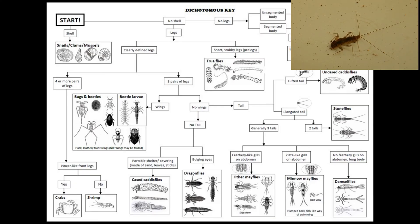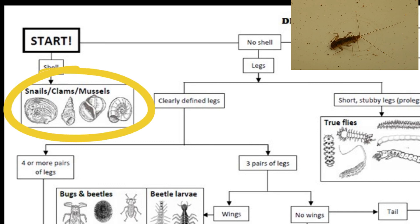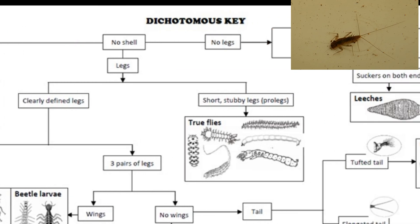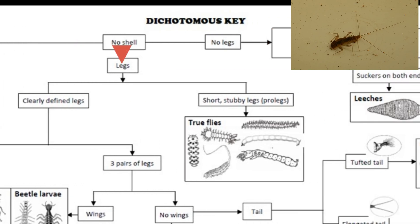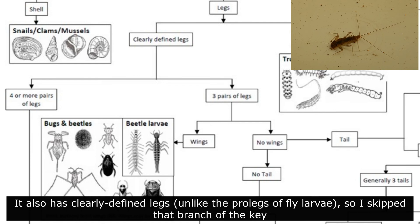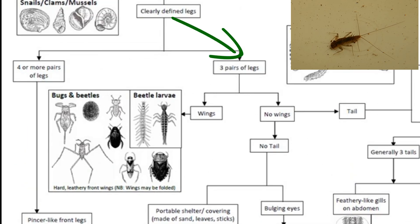With the dichotomous key, you start at Start. You are presented with two choices: Shell or No Shell. Shelled creatures include the snails, clams and mussels, which this clearly is not. So we move to No Shell. The question now is whether legs are present or absent. Our creature clearly has legs, so we move on to that block. Now the question relates to the number of legs present. If more than three pairs of legs are present, we have a crab or shrimp, which again this is not. So, off to three pairs of legs we go.